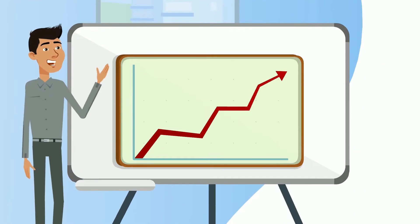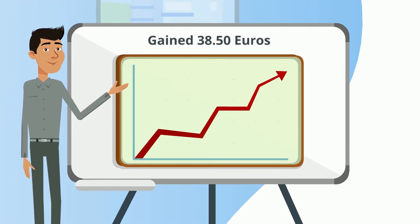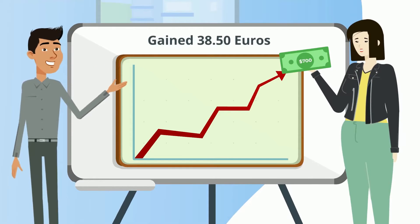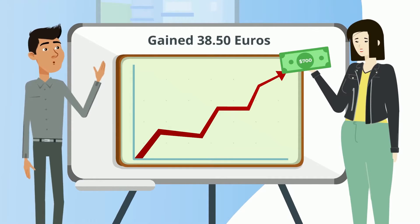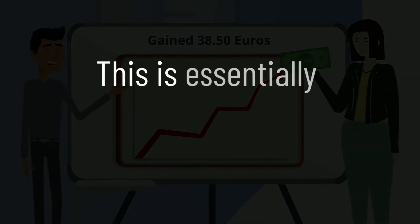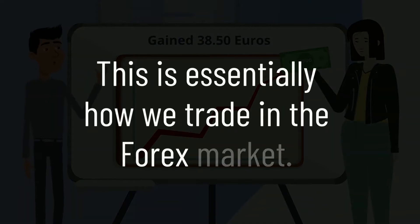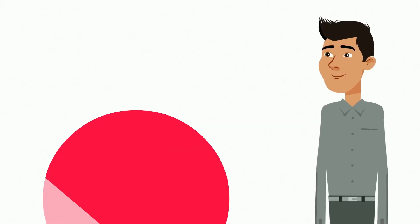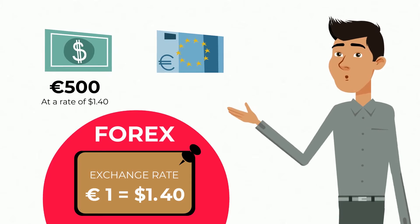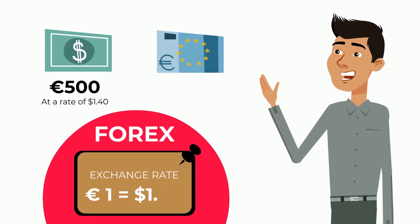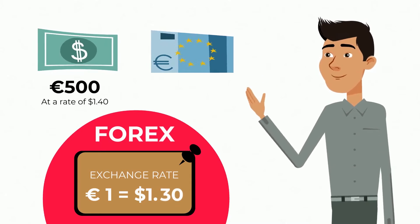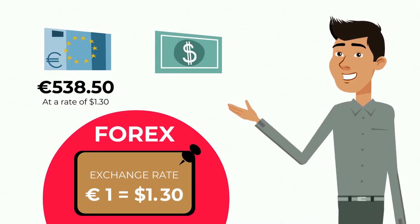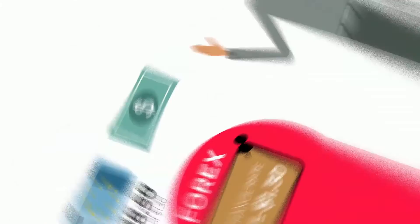You have gained 38.5 euros simply from holding your money in dollars while the exchange rate changed. This is essentially how we trade in the forex market. We buy a certain amount of a currency, hold on to it whilst the exchange rate moves, then change it back, making money along the way.